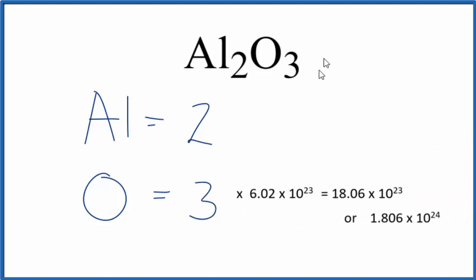So that would mean if you had one mole of Al2O3, you would have three times Avogadro's number. So you'd have this many oxygen atoms in one mole of aluminum oxide.